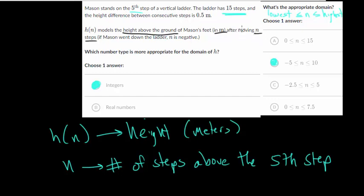So he could move 10 steps upward. So the highest amount that he can move would be 10. The lowest amount that he can move, he can go down five. So hopefully both of these values make sense.